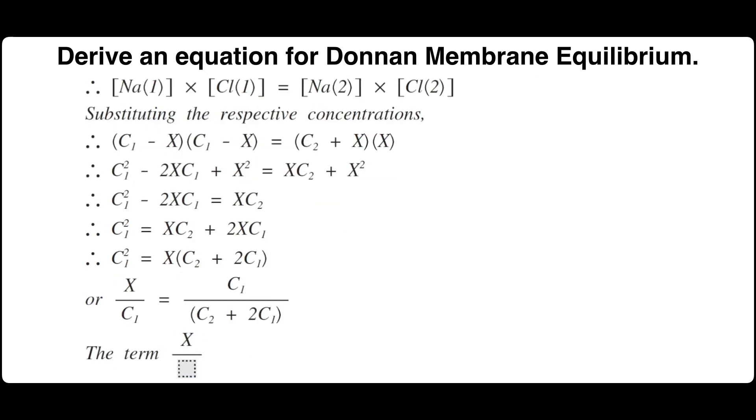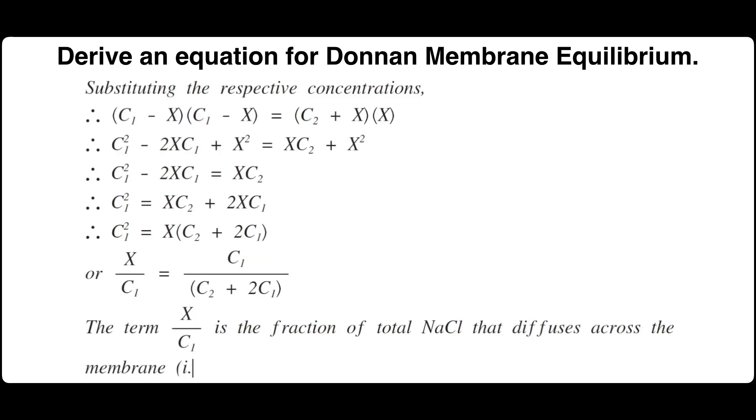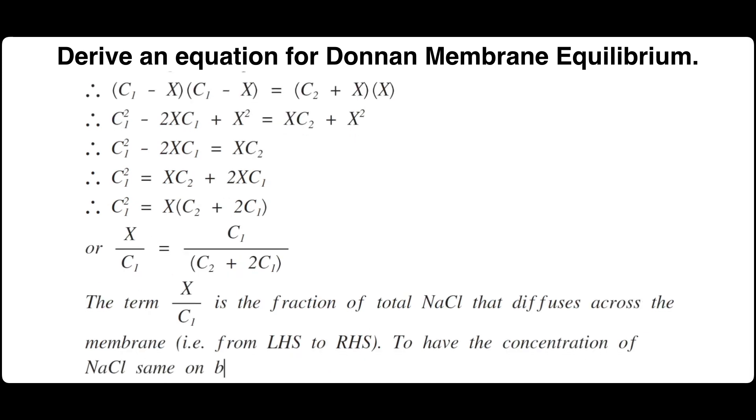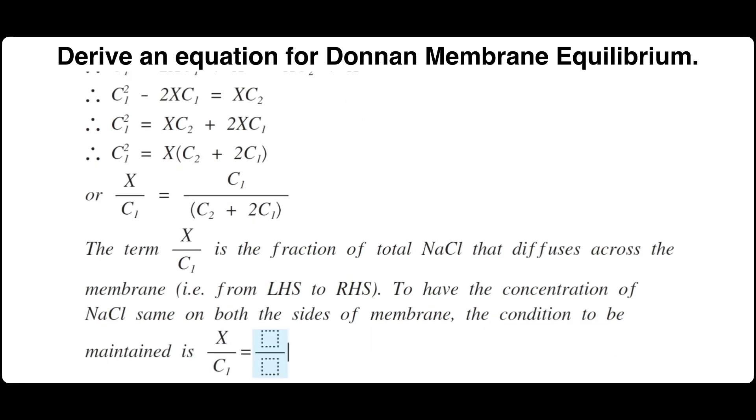The term X by C1 is the fraction of total sodium chloride that diffuses across the membrane from left hand side to right hand side. To have the concentration of sodium chloride same on both sides of membrane, the condition to be maintained is X by C1 must equal 1 by 2.